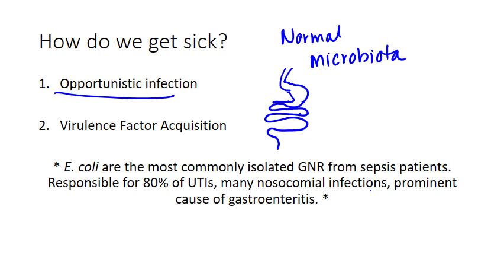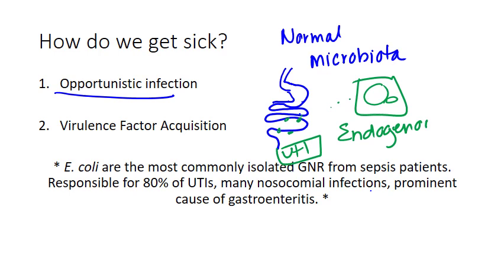If E. coli from the GI tract gets out and goes to the brain or the urinary tract, that's where it causes infection. Anytime a microorganism lives happily in one part of the body but causes disease in another, that's called an endogenous infection — nobody gave it to us, we gave it to ourselves when the bacteria moved from a site where it's okay to a site where it's not supposed to be. The most common way this happens is through trauma or displacement, such as a bowel perforation, or poor hygiene like a child not wiping correctly.